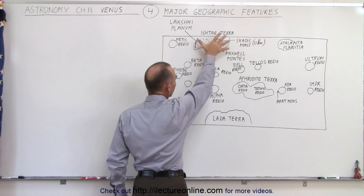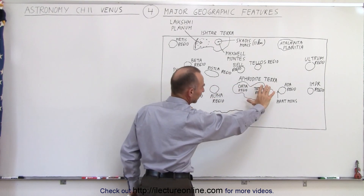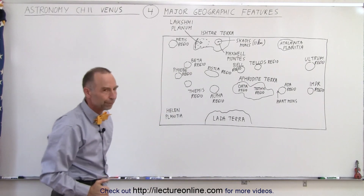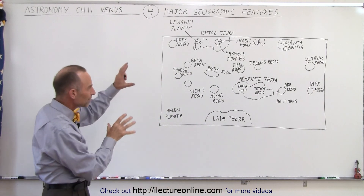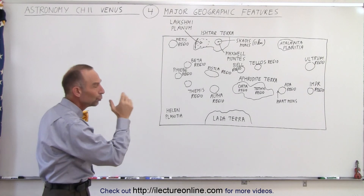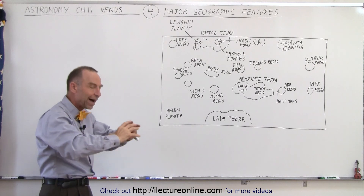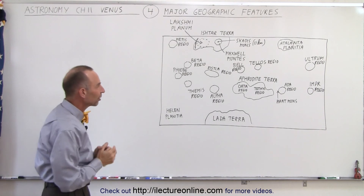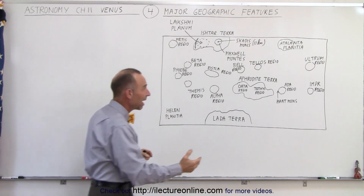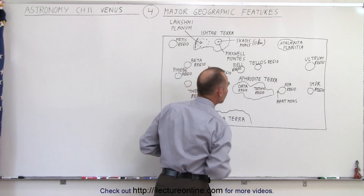Ishtar Terra is close to the North Pole, Lada Terra is close to the South Pole, and Aphrodite Terra is close to the equator, just basically south of the equator. On top of the three major regions called Terra, there are also regions called Regio or Regios. Those are also regions that are higher than the average elevation of the planet, but they're rather small in size. Aphrodite Terra is really made up of several of those Regios.